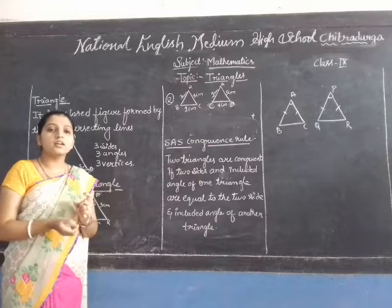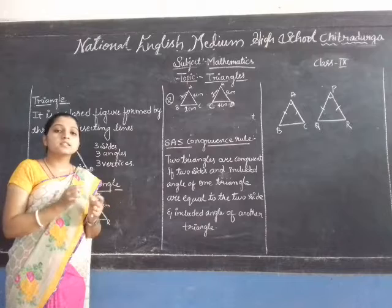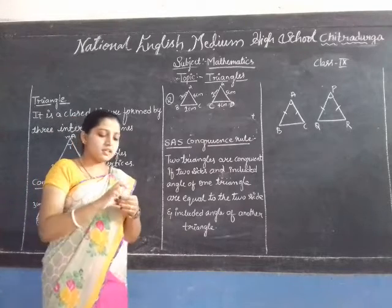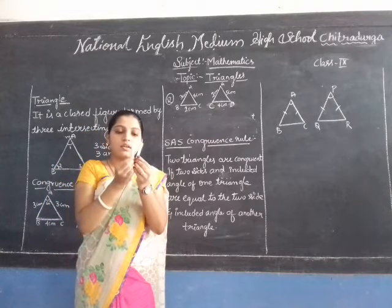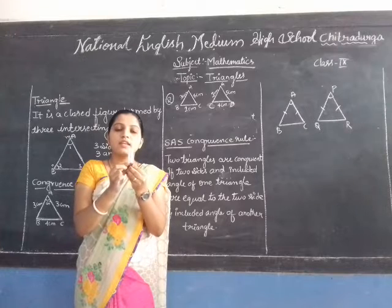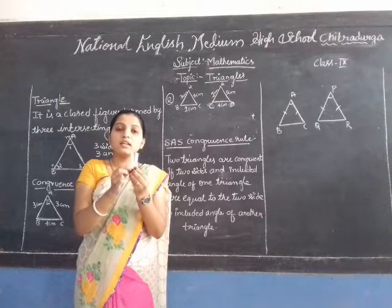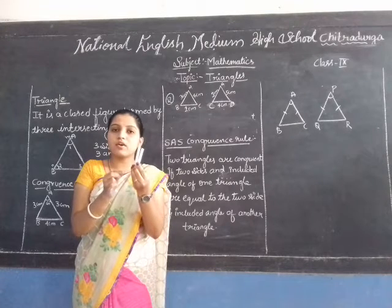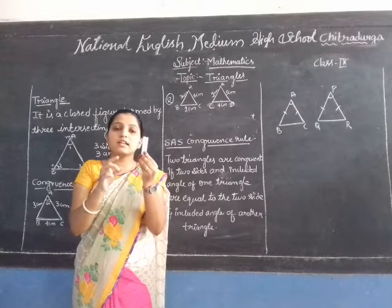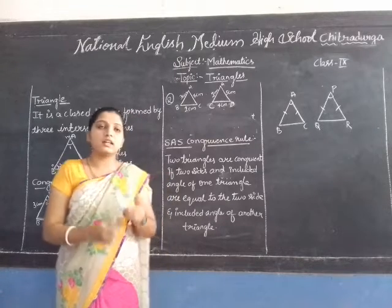Do you know what congruency means? Congruency means a closed figure having the same size and shape — both are the same. Here are two objects. They have the same height and the same shape. So we can say that these two objects are congruent to one another when they consist of the same size and same shape.